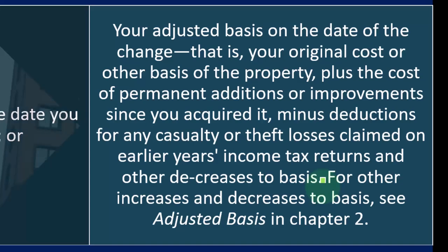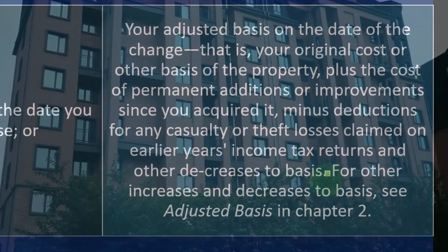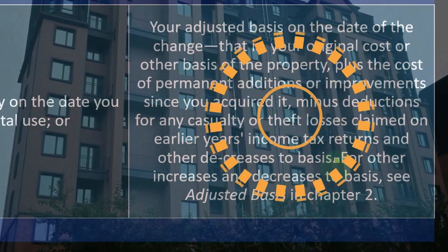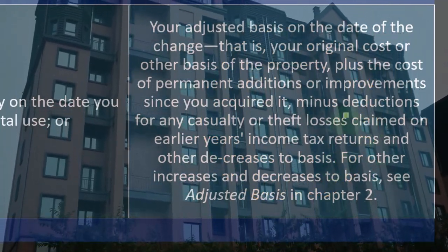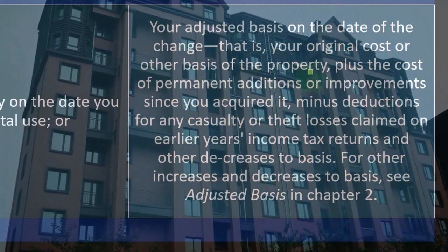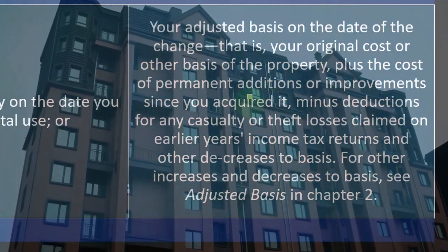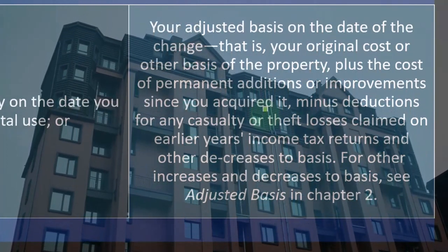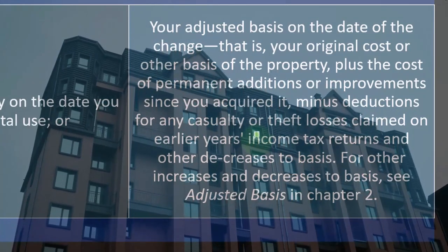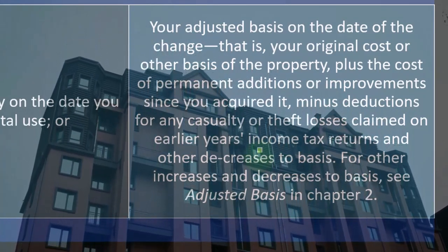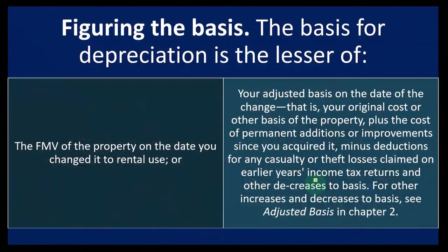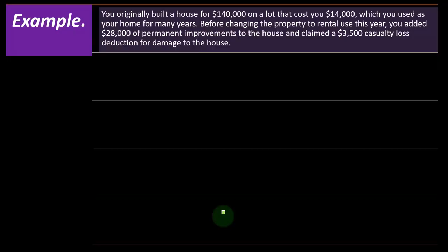Thinking about the basis of personal property like a home can be a bit complex. Unlike rental property, we don't have to track the basis of a personal home as closely — though it's good to do so, because when you sell your personal home you might be subject to a gain. With rental property, we depreciate the property and track it very closely. With a personal home, make sure to include the full basis: original cost, plus the cost of permanent improvements like a new roof, minus deductions for any casualty or theft losses claimed on prior income tax returns, and other decreases to basis.